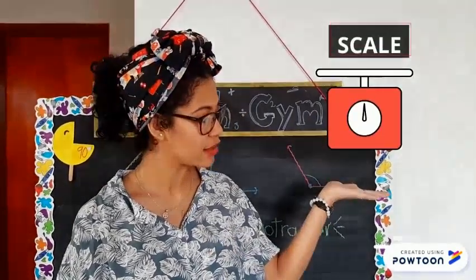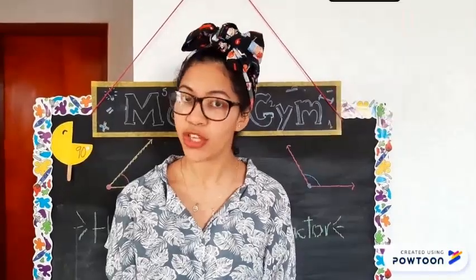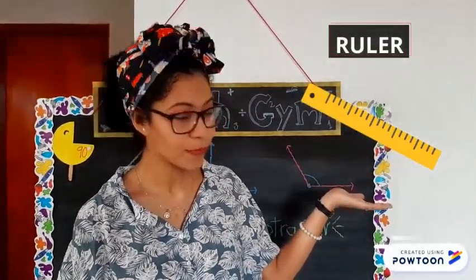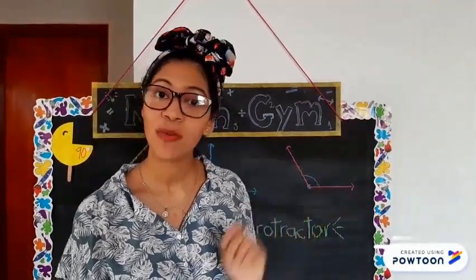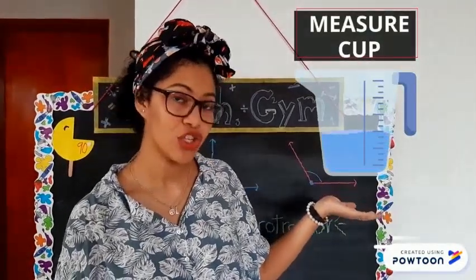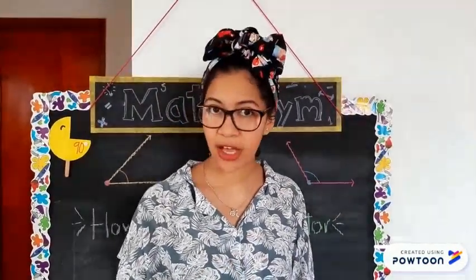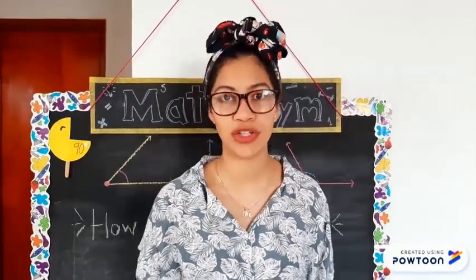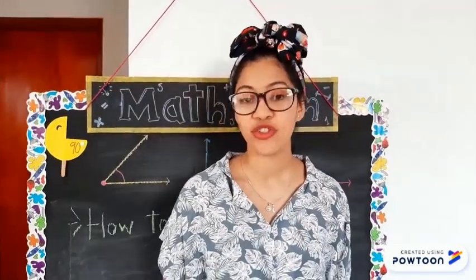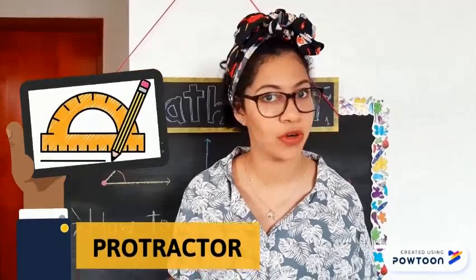So we know that to measure weight we use a scale. To measure length we use a ruler. To measure capacity we use a measuring cup. So what instrument do we use to measure angles? That is what we are going to learn now. To measure angles we use a protractor.